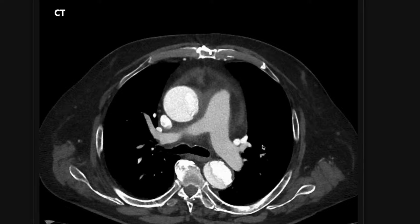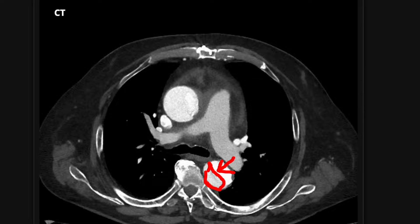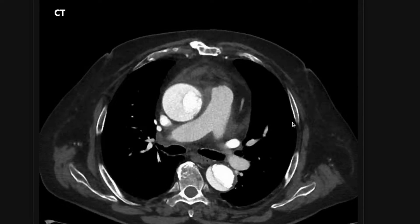To make the diagnosis, the first thing to think about is that you're going to see a dissection flap in the aorta. That line here is separating a brighter area from a darker area. Here's the darker area. That's our dissection, and that's the flap separating these two sections.